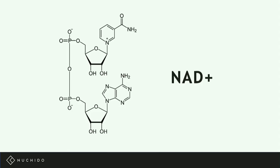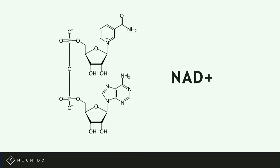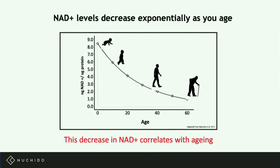NAD is really important for how you age. The reason for this is because your NAD levels exponentially decline as you get older. When you're young you have really high levels, but as you get older your levels have pretty much dropped through the floor — and that's not good, because this decrease in NAD actually correlates with the symptoms of aging.